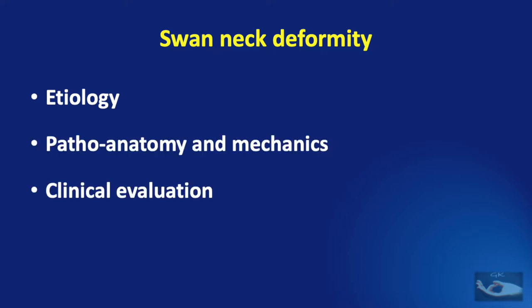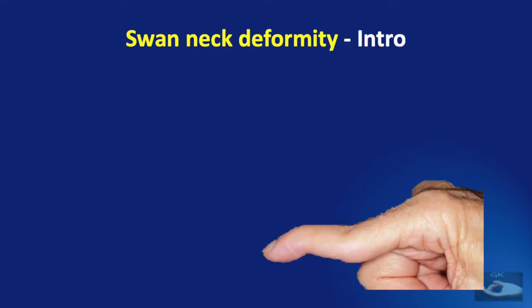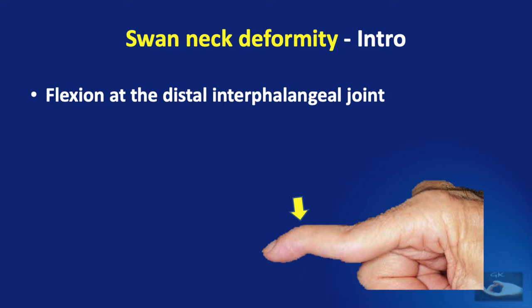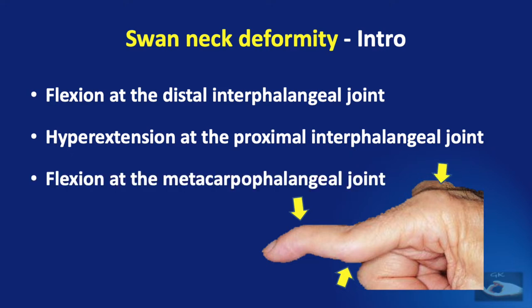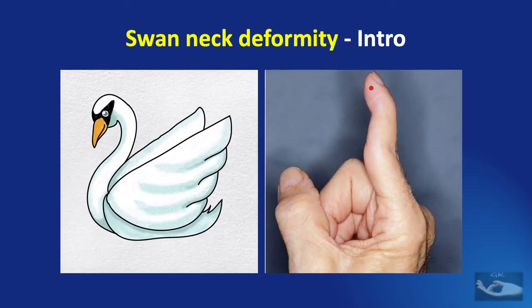The deformity consists of flexion at the distal interphalangeal joint, hyperextension at the proximal interphalangeal joint, and sometimes it may be associated with flexion at the metacarpophalangeal joint also. The deformity is called the swan neck deformity due to its similarity to the configuration of the neck of the swan.